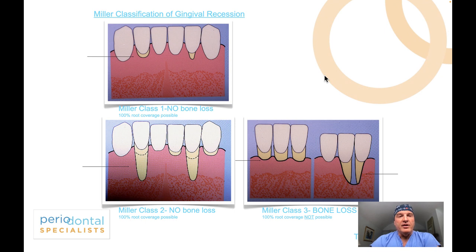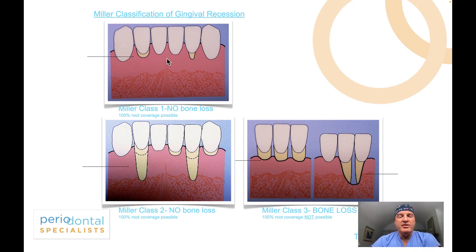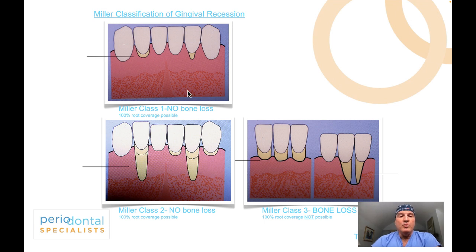The most important thing to consider when prognosticating the outcomes of connective tissue grafting is the Miller classification, which we all learned to some degree in dental school. Miller Class 1, for example, involves mild recession — generally one to three millimeters, maybe four — with a great deal of keratinized tissue and, most importantly, no bone loss. That is very important in achieving outcomes. If we have bone loss, as in a Class 3, we will have different outcome expectations than with Miller Class 1 and 2.